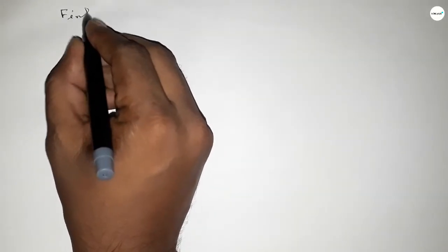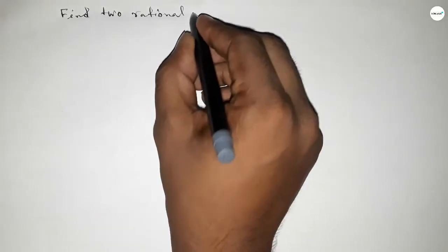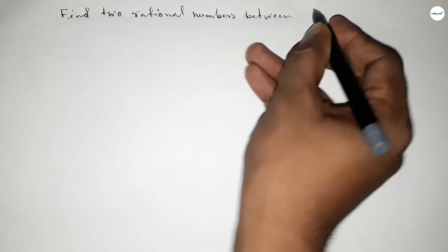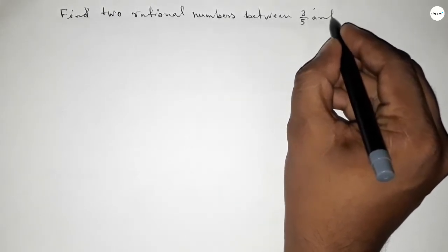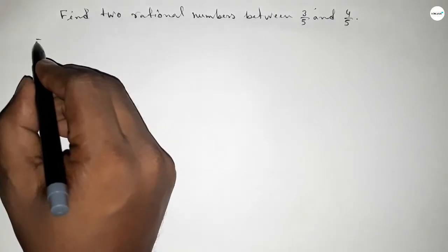Hi everyone, welcome to SSR Classes. Today in this video we have to find two rational numbers between 3/5 and 4/5.